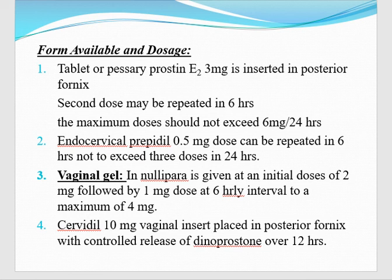Vaginal gel is available. In nulliparous patients, the initial dose is 2 mg, then 1 mg at 6 hourly intervals, maximum up to 4 mg. Then Cervidil — it is a 10 mg vaginal insert placed in the posterior fornix with controlled release of dinoprostone over 12 hours.